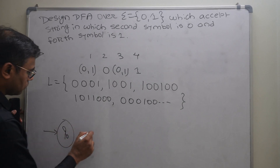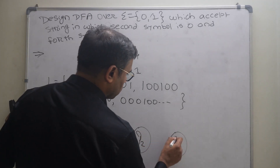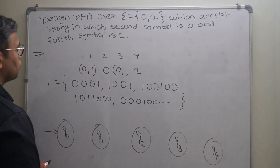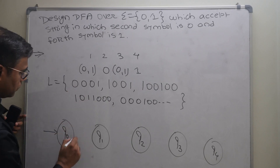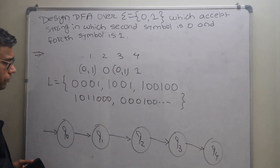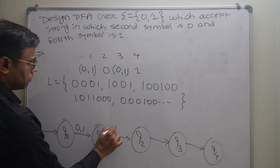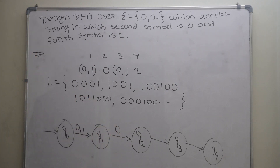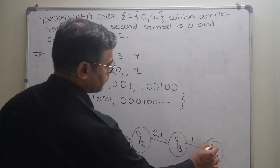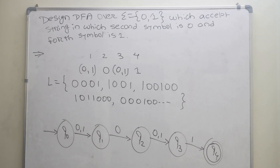Now I will construct the 5 states: q0, q1, q2, q3, and q4. For a string like 0001 — the first symbol can be from 0 or 1, the second symbol should be 0, so there is only one path on 0. Do not apply a cycle here. The third symbol can be from 0 or 1, the fourth symbol should be 1, and q4 will be the final state.